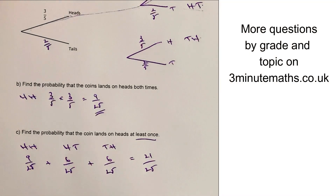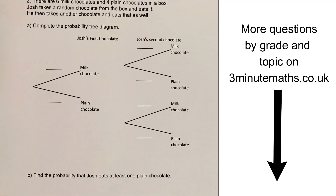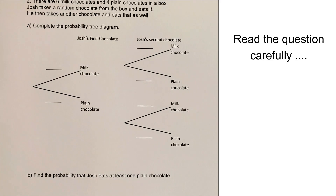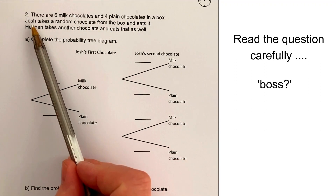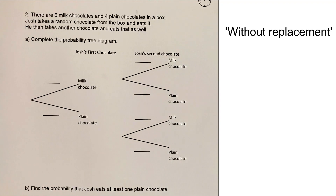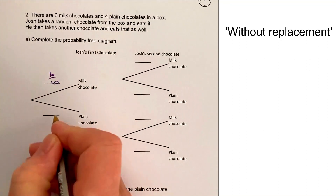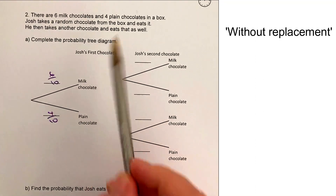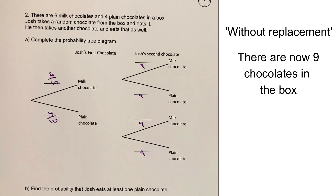Let's move on to the second question, which is all about eating chocolate. There are 6 milk chocolates and 4 plain chocolates in a box. Josh takes a random chocolate and eats it, then takes another. The important thing here is that although we start with 10 chocolates, because he's eaten one, it becomes 9 in the box for the second pick.